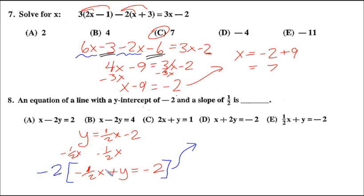So anyway, negative two times negative one-half x is going to leave you with x. Negative two times positive y is going to be minus two y, equals negative two times negative two will give you positive four. So x minus two y equals four, the answer is B.